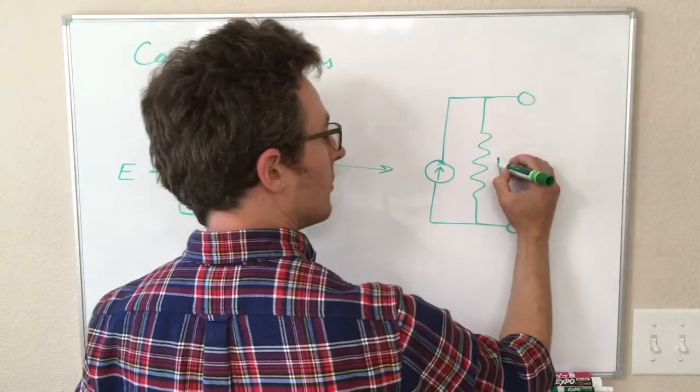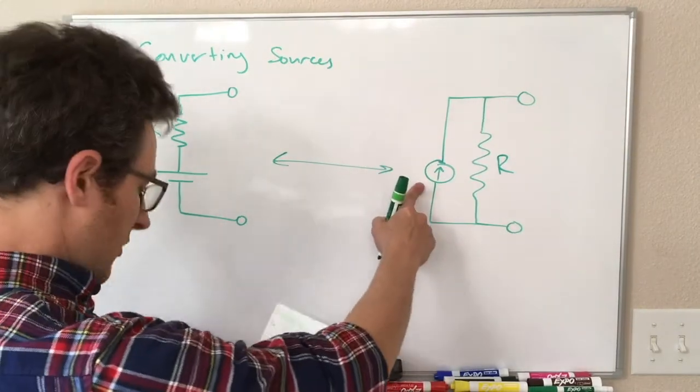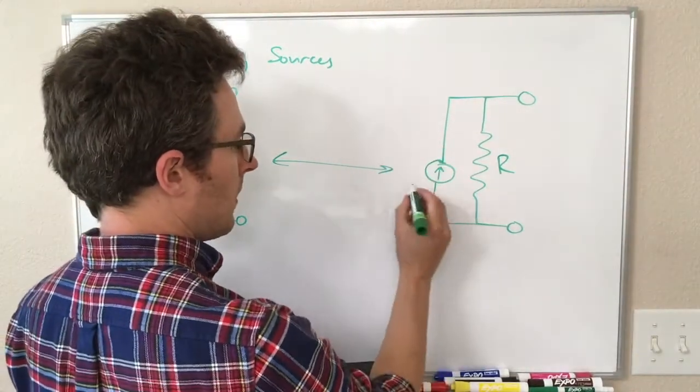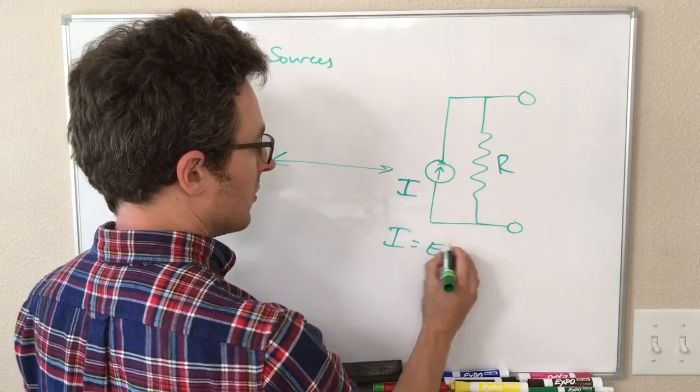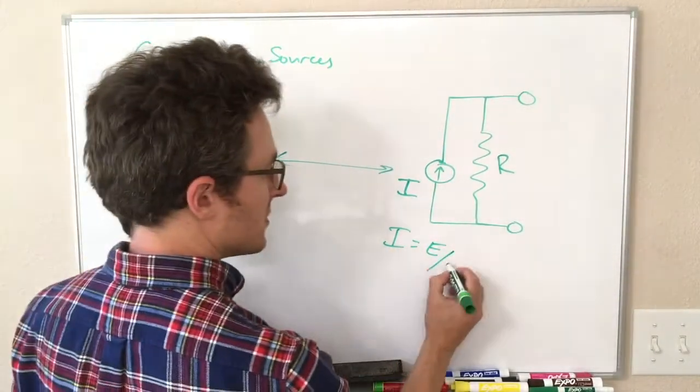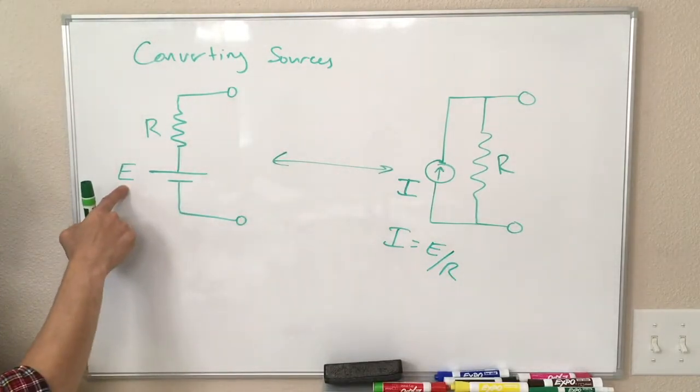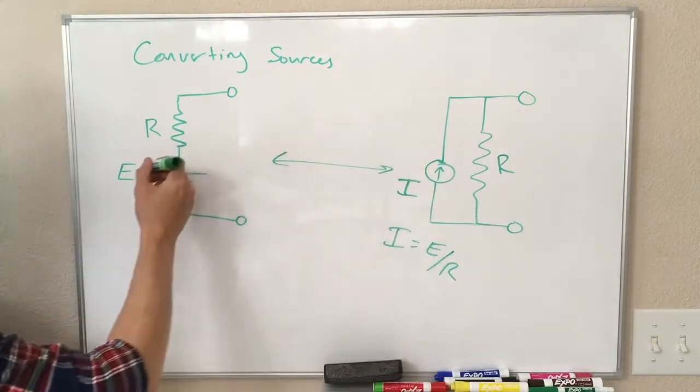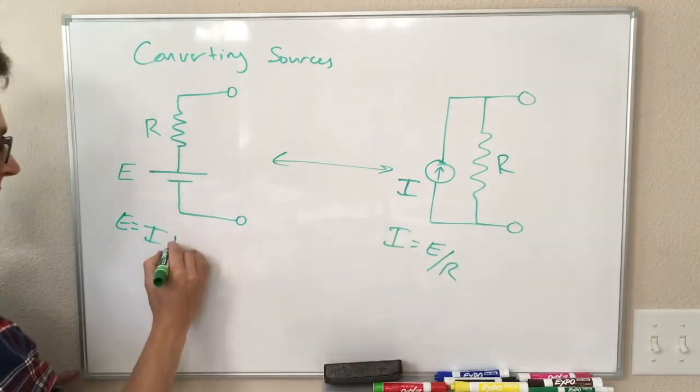Where this resistor value is the same, and the value of the current here is equal to whatever this voltage is divided by that resistance. Going in the other direction, if we started with this and wanted to convert it to this, this voltage is equal to this current times that resistance.